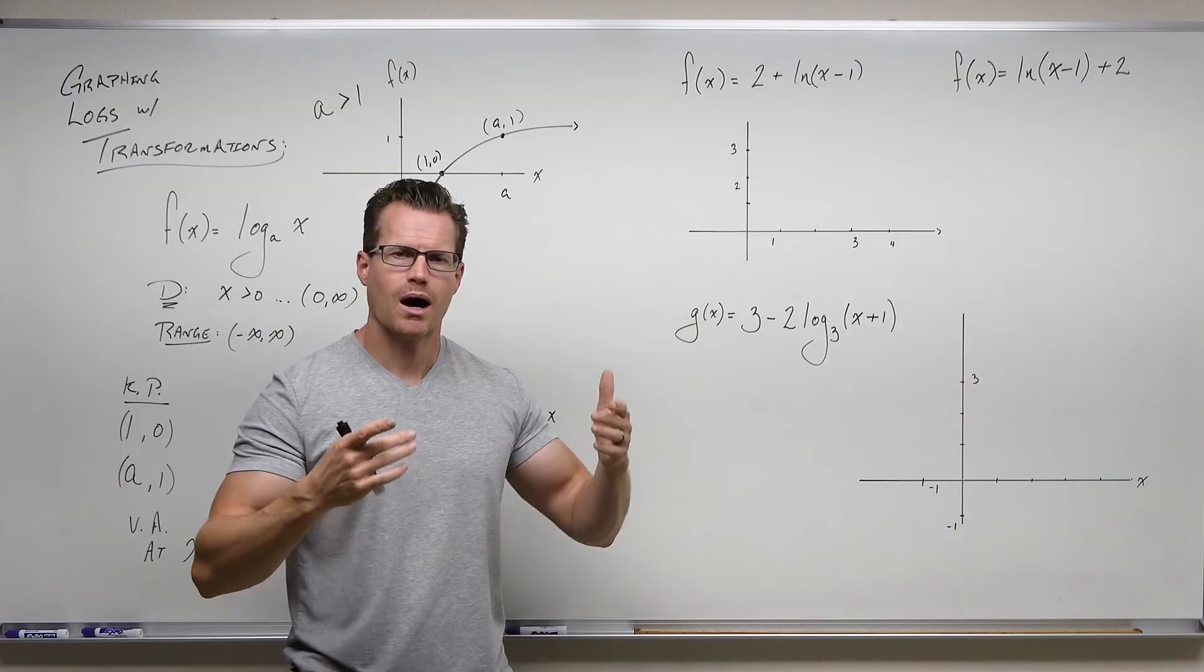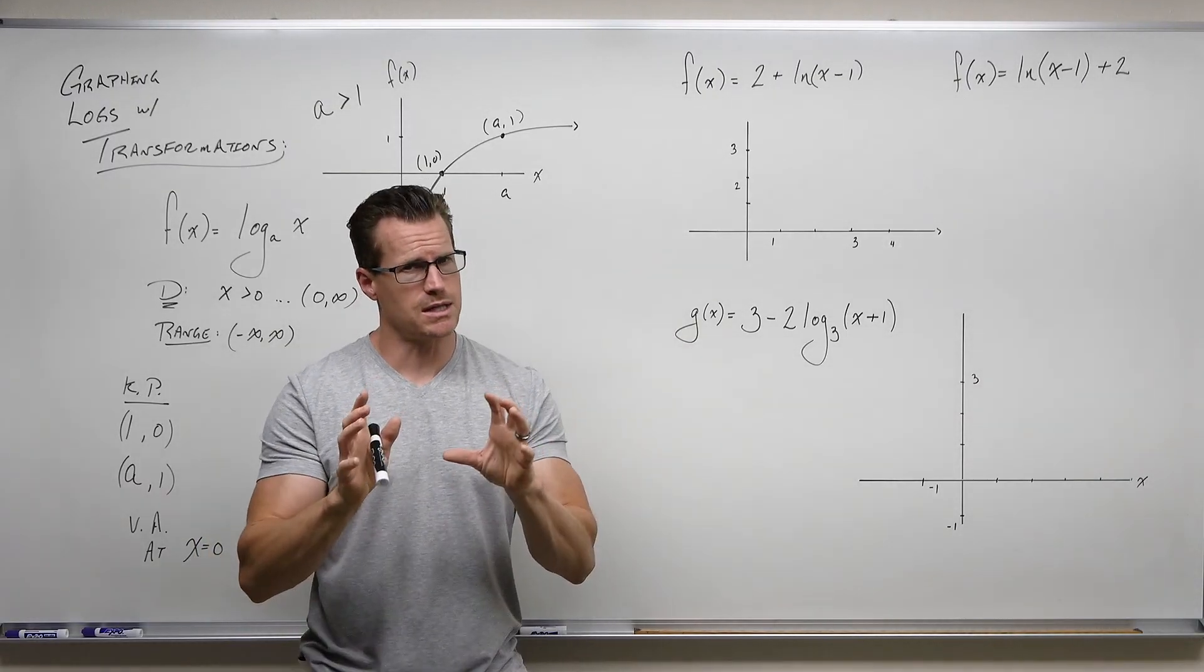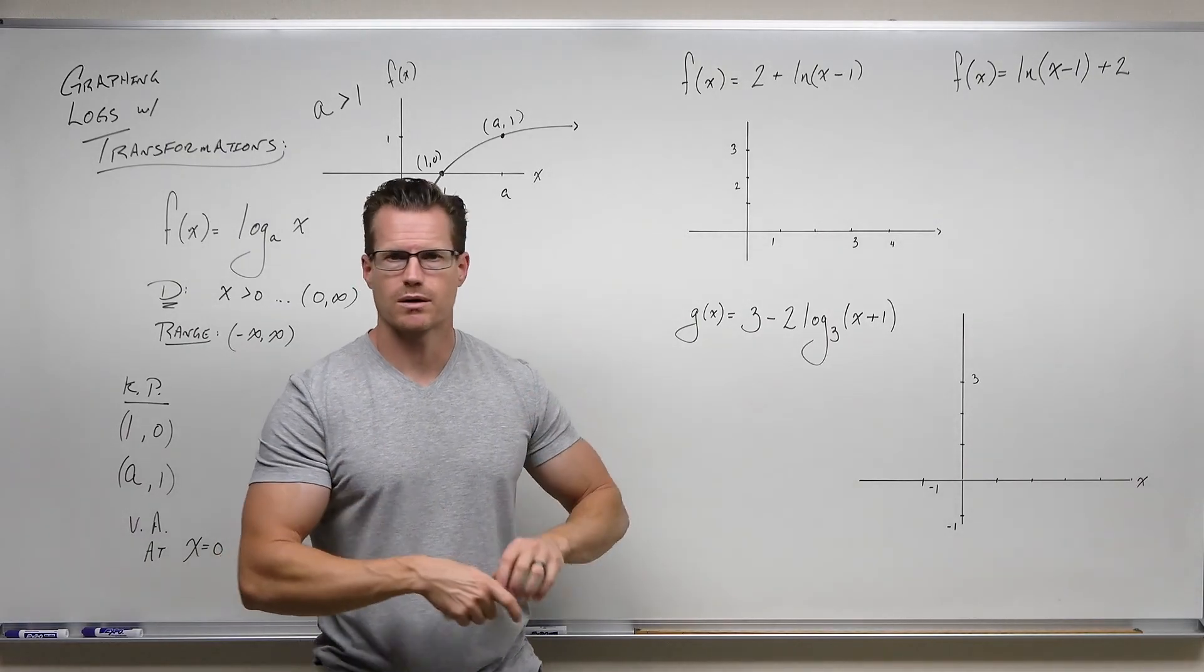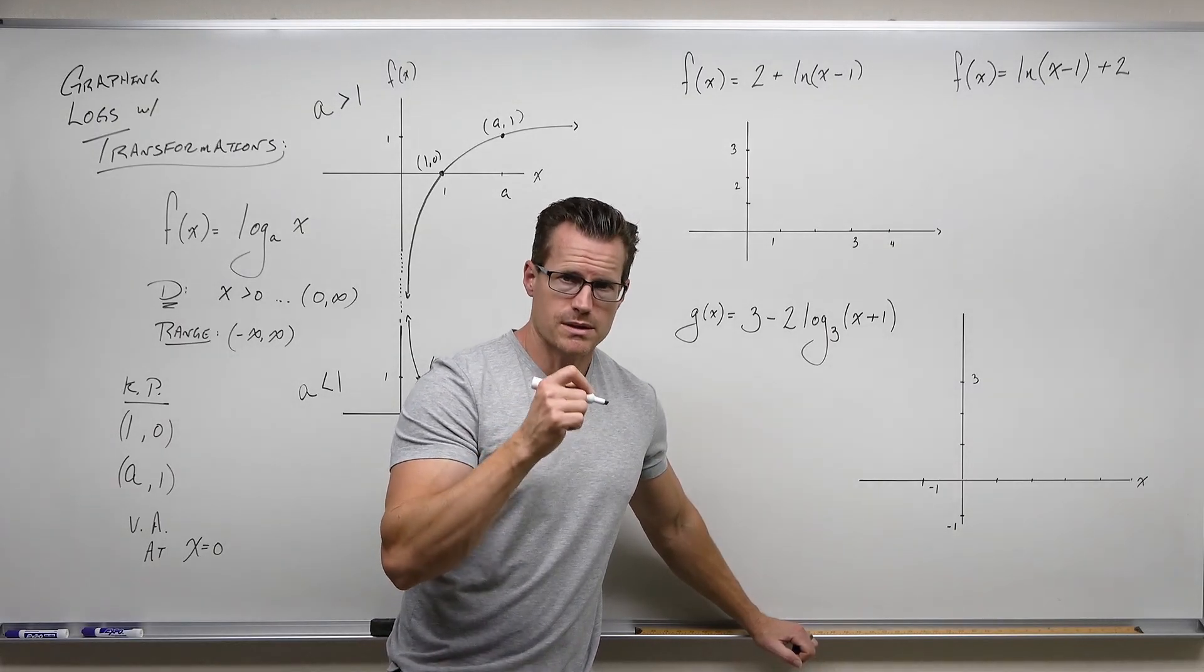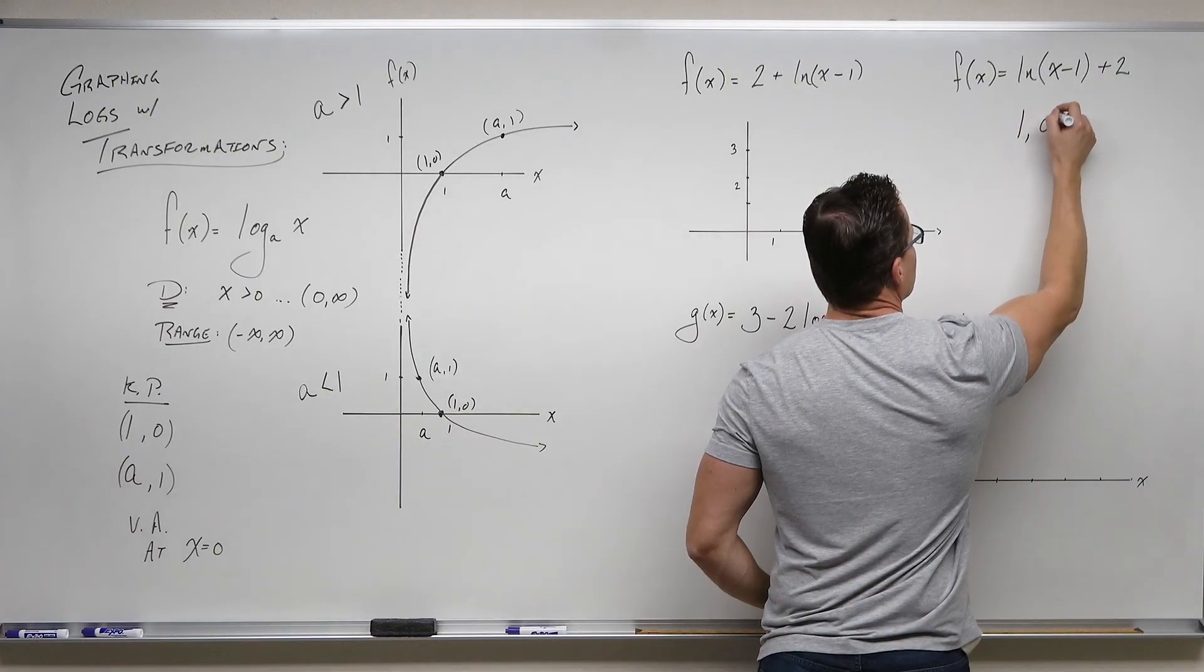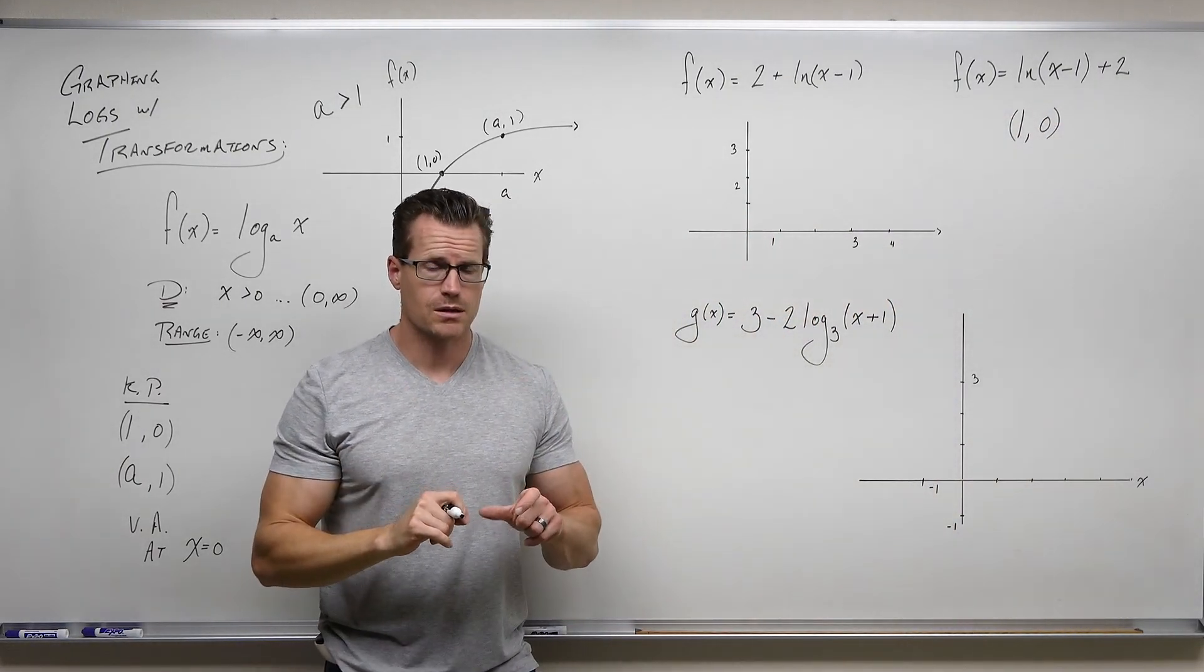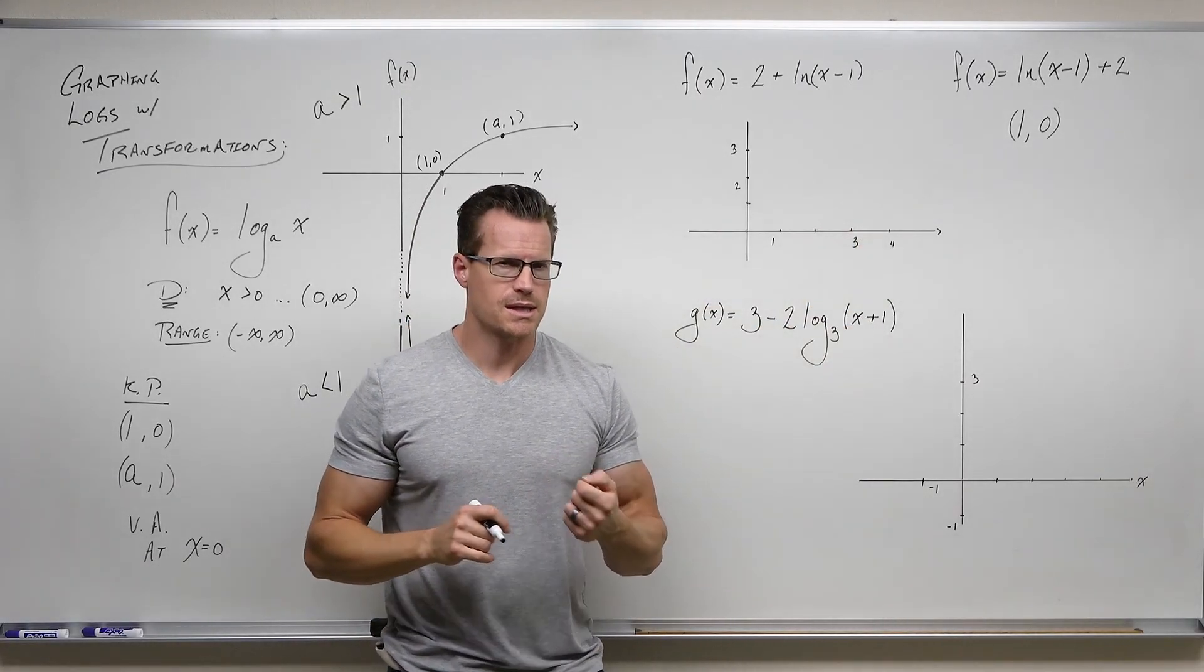All of our functions that we deal with have the same type of look for transformations. Anything within the function is a horizontal shift, anything after the function is a vertical shift, anything in front of the function is a reflection or vertical stretch or compression. So when we take a look at our logarithm, the same things happen. Here's how I want you to think through it. I want you to think, this is a logarithm. Yeah, it is, it has a base of E. You need to know that.